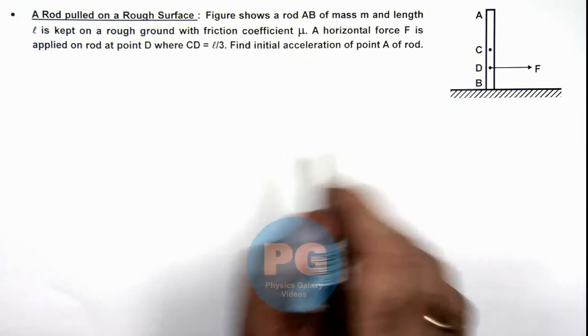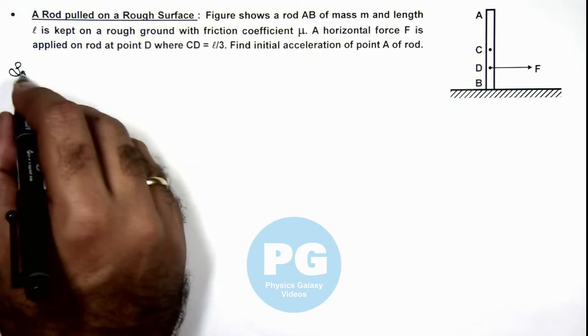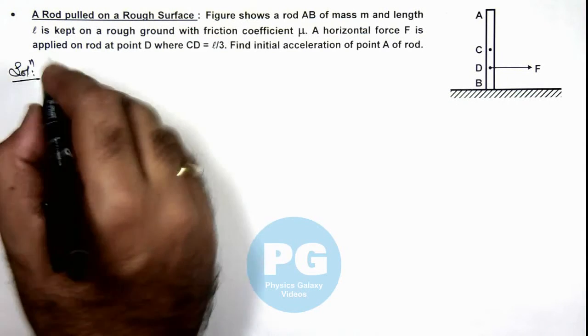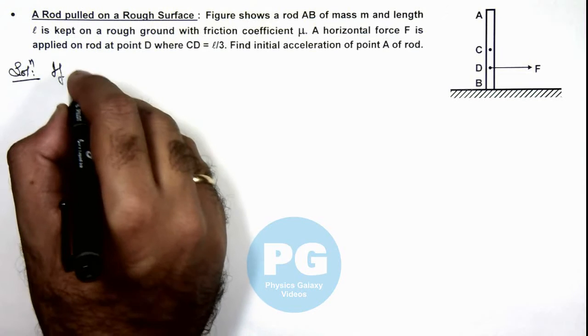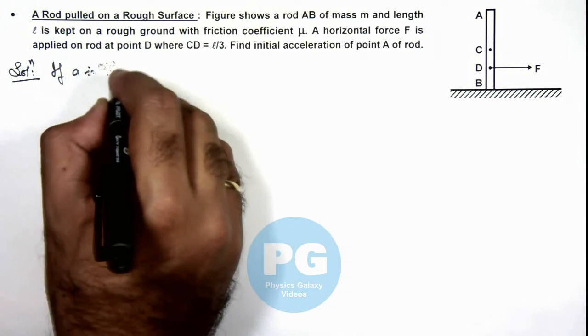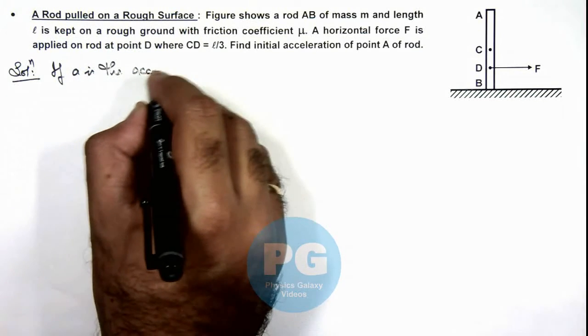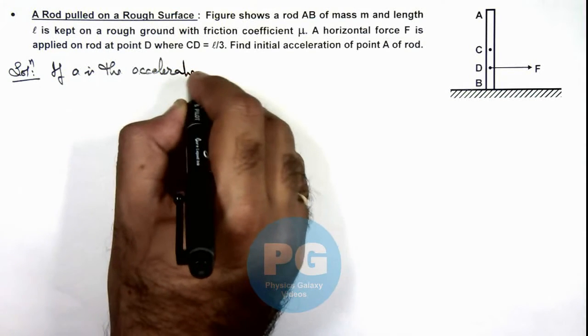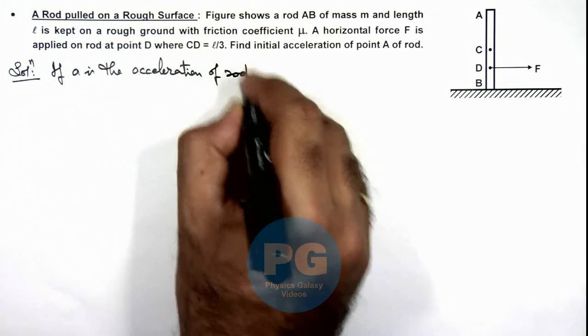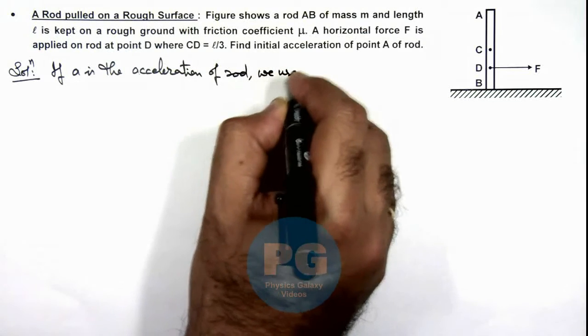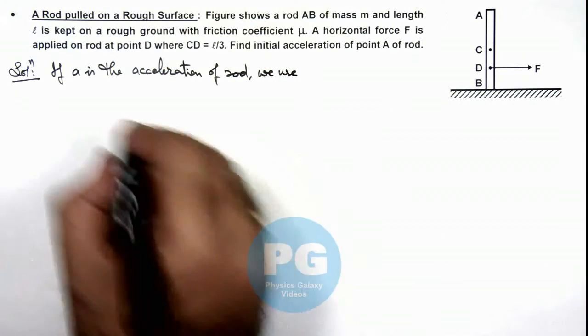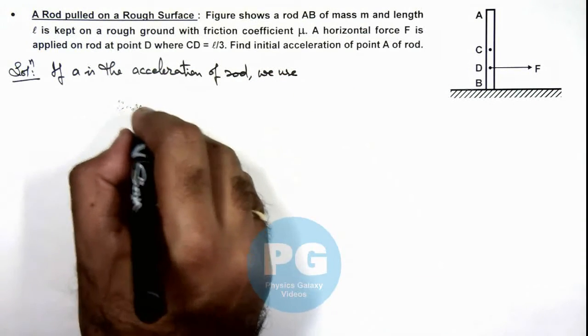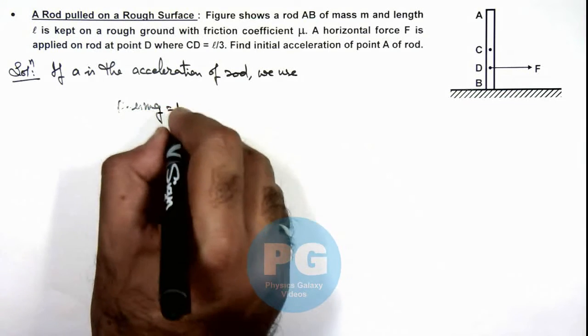Now, in this situation, if a is the acceleration of rod, here we use F minus μmg is equal to ma.